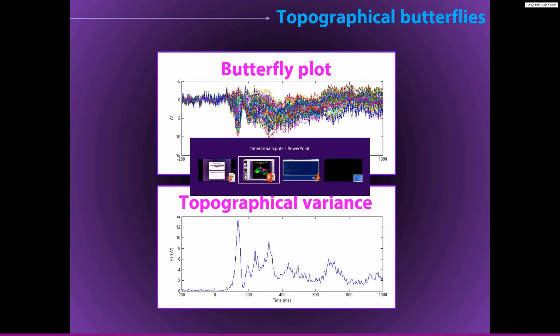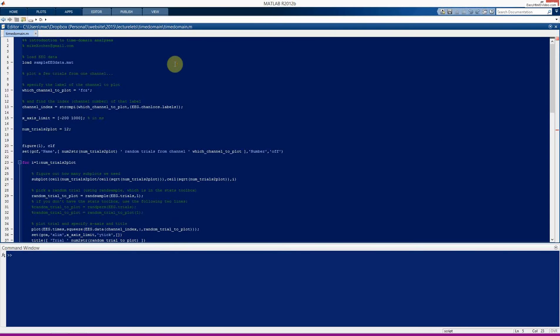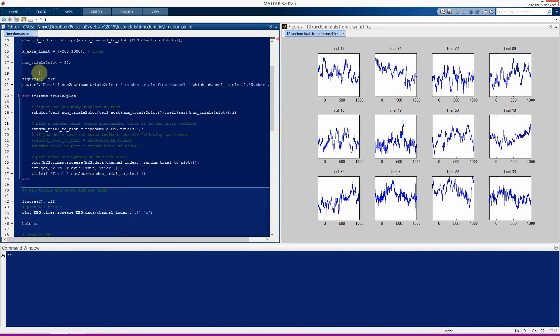So now we'll switch to MATLAB very quickly, so you can see some code that will generate some of these figures. If you run this first cell here, we define a channel that we're going to use to plot, in this case I chose FCZ, but you can change it to whatever other electrode. Here, we define an x-axis limit, just for fixing the plots.